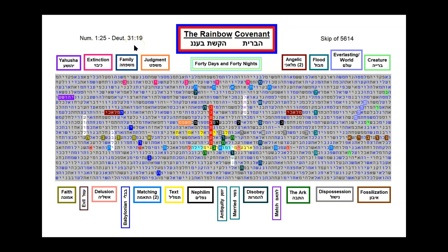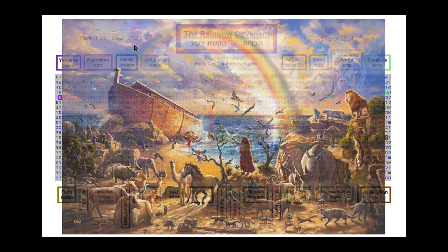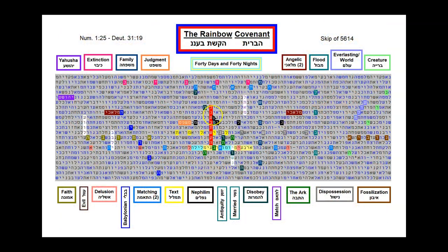After the worldwide flood that occurred in the days of Noah, Yahuwah made a covenant promising to never destroy the earth again with water. The rainbow was given as a sign of this everlasting covenant. We already saw that this is the word rainbow, and then the covenant is in the blue going up diagonal. The word everlasting is here in the mauve color going down diagonal. And then the word flood is in this teal color going up vertically.